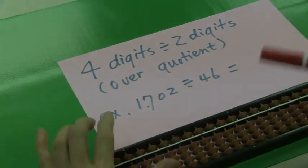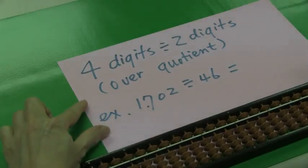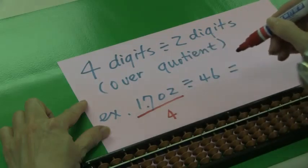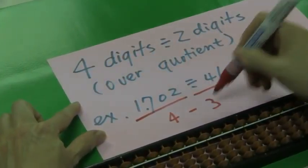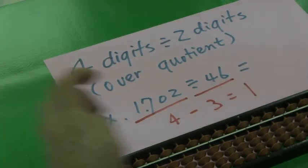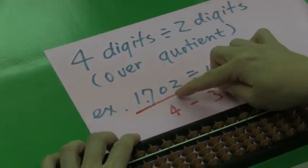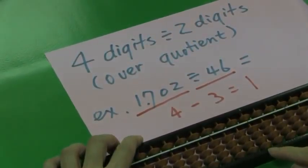First, we need to place the dividend. Four digits, four, subtract three. It's one. We then know we should place the dividend in the unit's row.